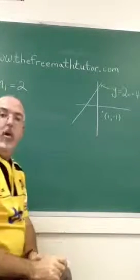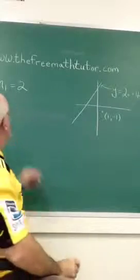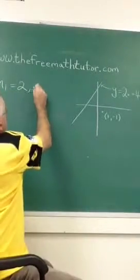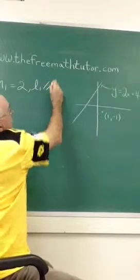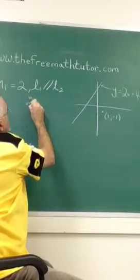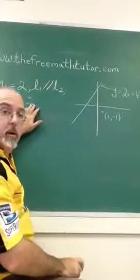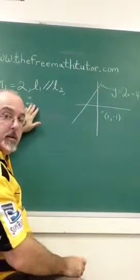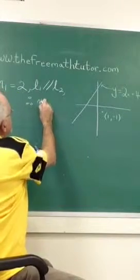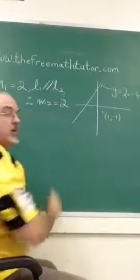I say m1 equals 2. I have to point out that the lines are parallel, so I say l1 parallel to l2. Therefore, the slope of the second line has to be the same as the slope of the first line because they are parallel. m2 is also equal to 2.